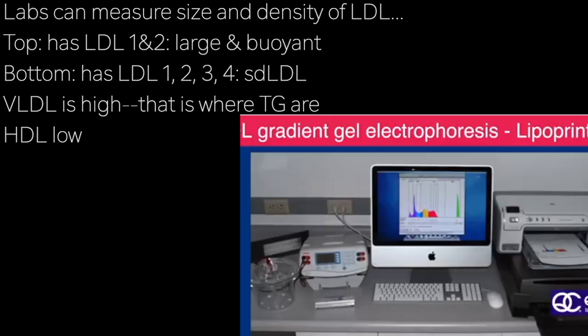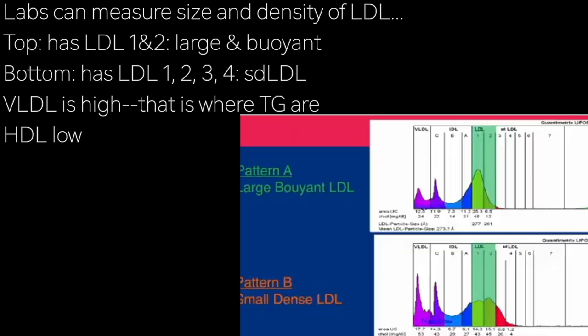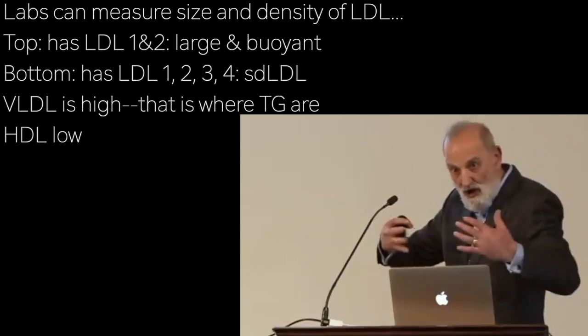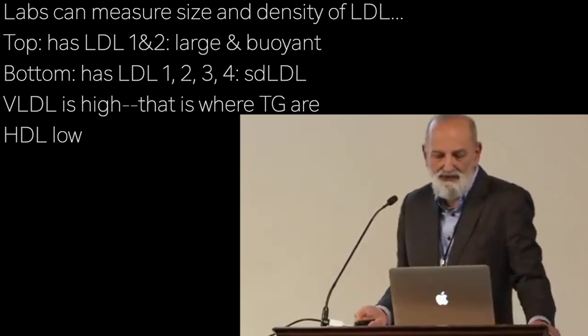We can now measure small dense LDL. There are labs in Australia that can measure it by electrophoresis, separating out the subfractions. The top pattern has LDL 1 and 2, which are large and buoyant. The bottom pattern has LDL 1, 2, 3, and 4 — the higher the number, the more small and dense it is, and that's the bad pattern. You can also see that VLDL is high because that's where the triglycerides are, and HDL is low. The whole pattern — not just one marker — tells you there is insulin resistance in that patient.